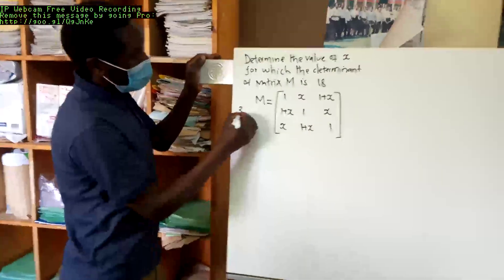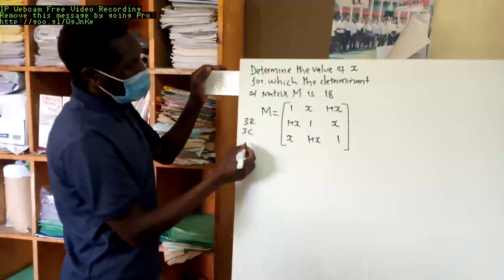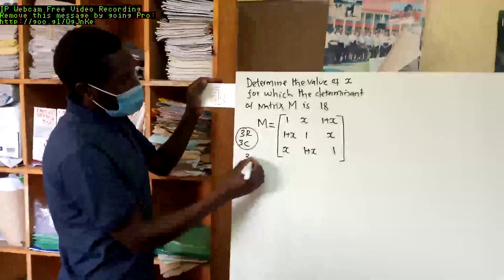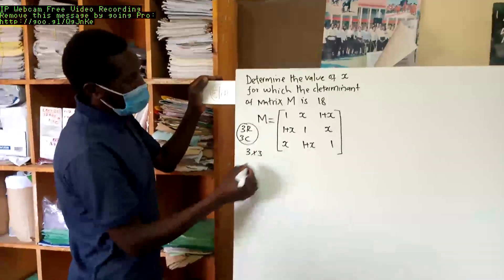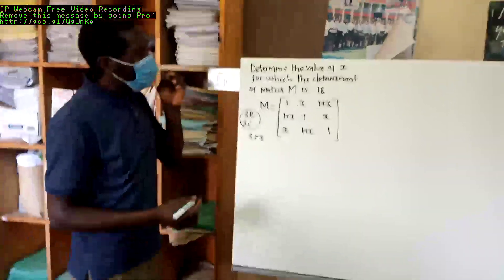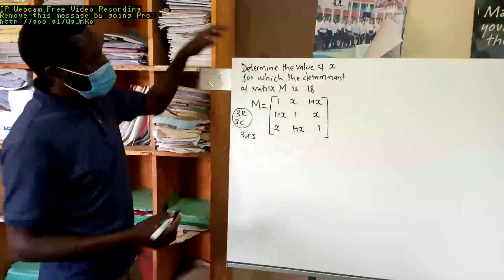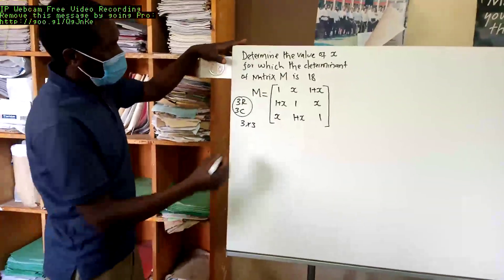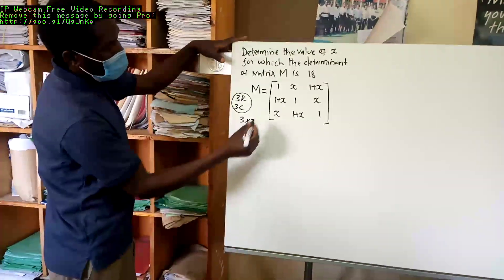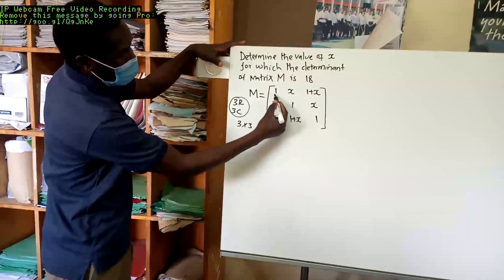Because it has three rows and three columns, it is called a 3 by 3 matrix. So to get the determinant of a 3 by 3 matrix, we will proceed as follows. We take the first element here.